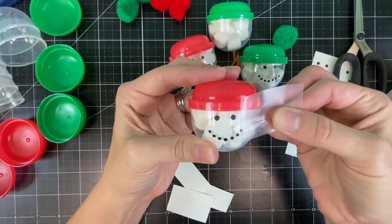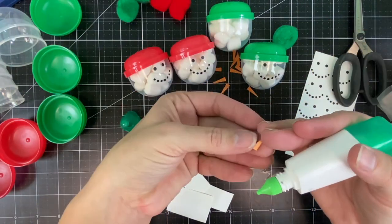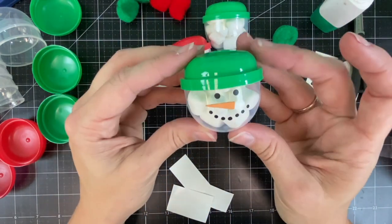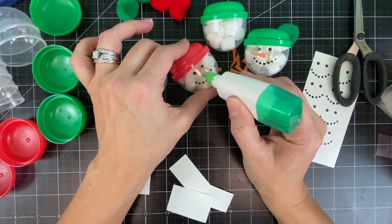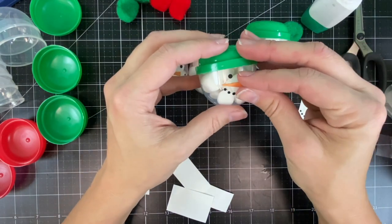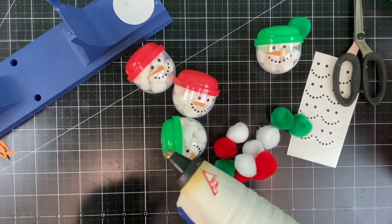You'll repeat that for all 12 of your capsules. I'm just doing four of them here to give you an idea of how it works. Then you'll use some liquid glue to place down your carrot noses onto each of the snowmen. Once you have that finished you can add the pom-poms to the top of the lids.